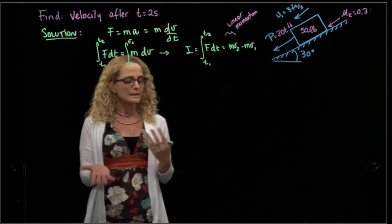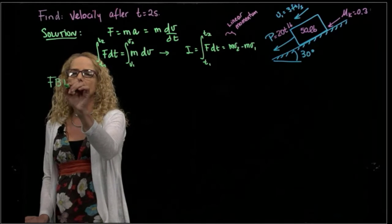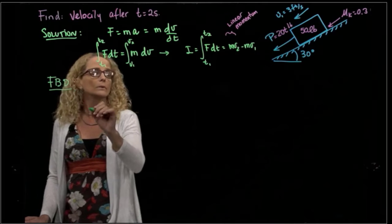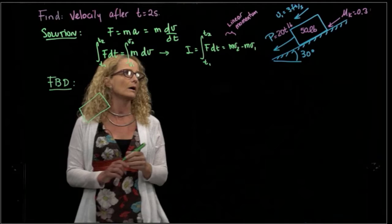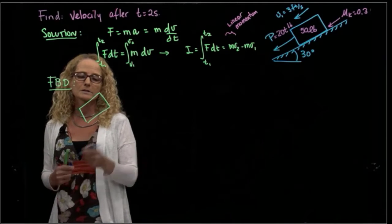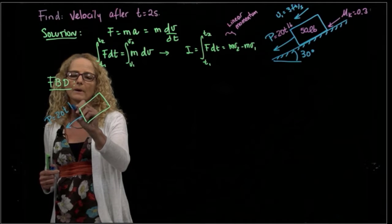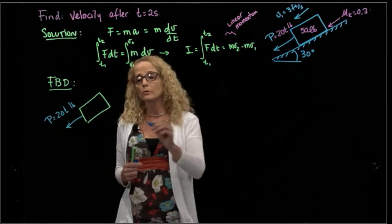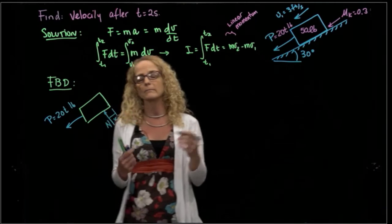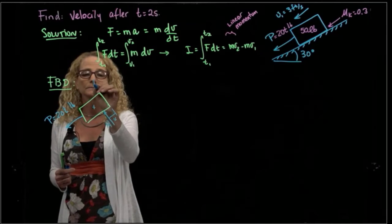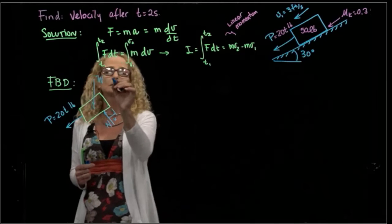And the first thing that we will do is draw our free body diagram. We always have to see which forces are applied to our system. So we draw our crate, and then we have the force that is being applied, which is P equals 20t pounds. We have a normal force that is not necessarily in the middle of our block. We have our weight.